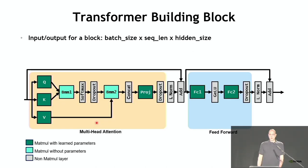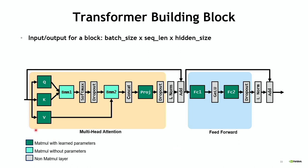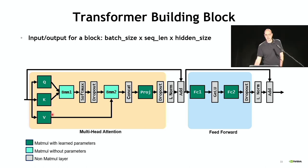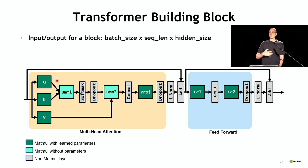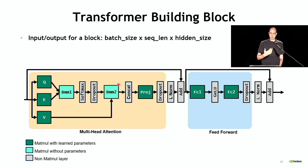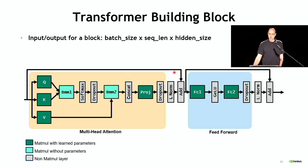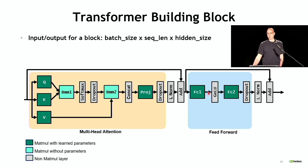At a high level, a transformer building block has QKV matrix multiplies (dark green, involving learned parameters), batch matrix multiplies for the attention mechanism (light green, involving only activation tensors), projection and fully connected layers, layer normalization and softmax (gray, reductions), and dropout and GeLU (point-wise operations). Quite a few matrix operations, some reduction operations, and some point-wise operations. For the transformer's computational characteristics: matrix multiplies and batch matrix multiplies get large for larger language models. Reductions for normalizations, point-wise operations for skip connections.